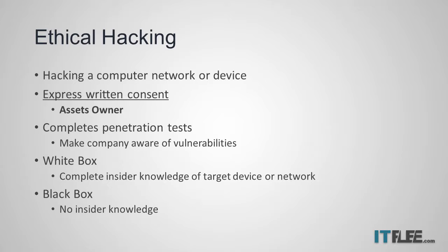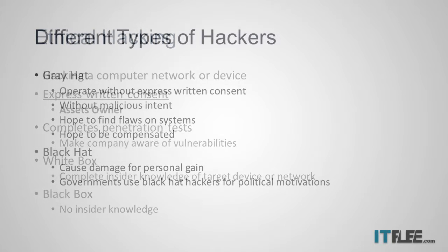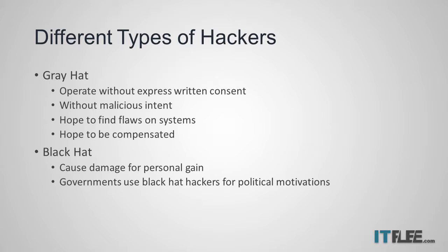Another type of hacker is the gray hat hacker. A gray hat hacker is a unique type of hacker because they are freelancers and operate without written consent. They are known to discover system weaknesses without written permission but also without malicious intent. Their goal is to bring these flaws to the attention of the system owner so they can be corrected. A lot of times a gray hat hacker is hoping to be compensated for giving the information to the company instead of a malicious hacking group. So even though the end result for the company they're hacking is good, a gray hat hacker is not an ethical hacker.